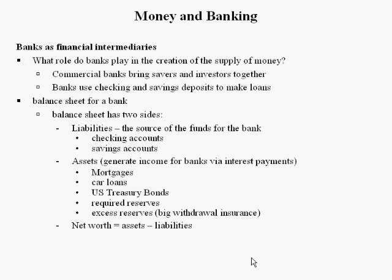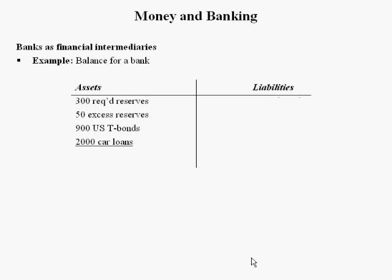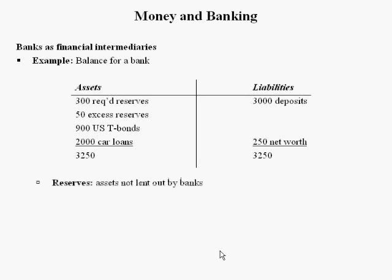The net worth of the bank is the difference between assets and liabilities. Here we have a T-account for a bank. This bank has $300 million in required reserves and $50 in excess reserves — it could have made more loans but chose not to. It has $900 in U.S. Treasury bonds and $2,000 in car loans for total assets of $3,250. On the liability side, it has $3,000 in deposits. Since these are checking accounts, the bank is required by law to hold $300 in reserve. The net worth of the bank is $2,250, and both sides add up to $3,250.